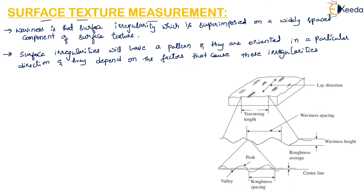Some of the irregularities are shown in this figure. In the lay direction, you can see there is a waviness spacing and the height of waviness is given. There is also a roughness spacing with a valley and a peak, and the center line is indicated.